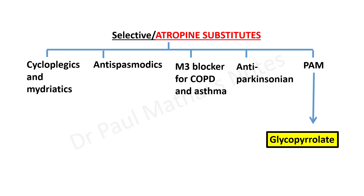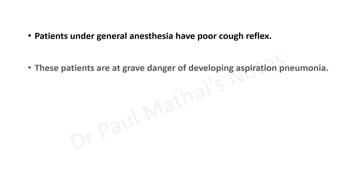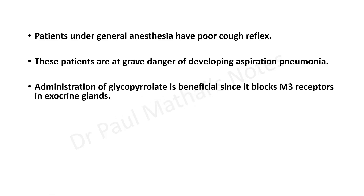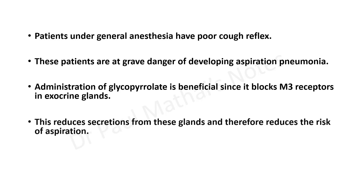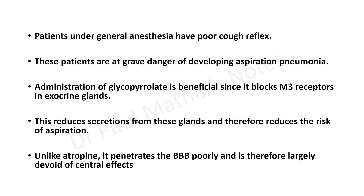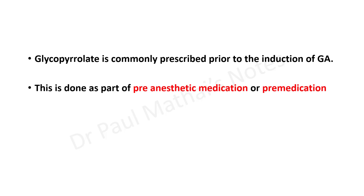Regarding pre-anesthetic medication, the example is glycopyrrolate. Patients under general anesthesia have a poor cough reflex and are at grave danger of developing aspiration pneumonia. Glycopyrrolate is beneficial because it blocks M3 receptors in exocrine glands, reducing secretions and therefore reducing the risk of aspiration. Unlike atropine, glycopyrrolate penetrates the blood-brain barrier poorly and is therefore largely devoid of central effects. It is commonly prescribed prior to the induction of general anesthesia as part of pre-anesthetic medication.